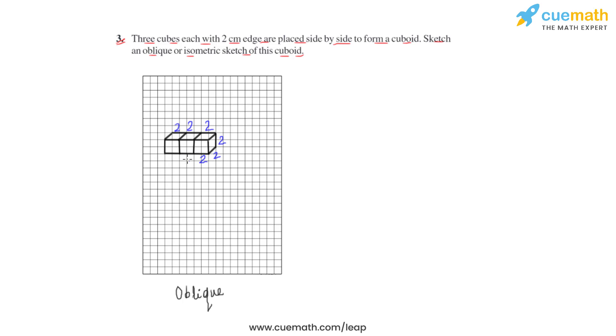Now let us see how the isometric sketch of this particular figure will look. For that, we will take this isometric dot sheet, which we know is used to represent a 3D figure.